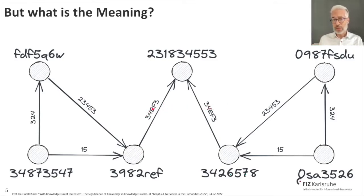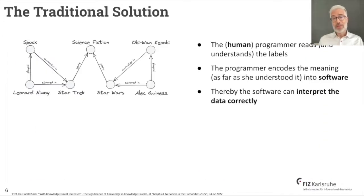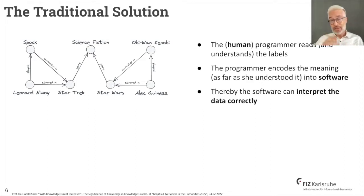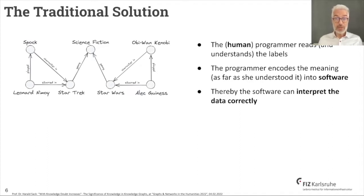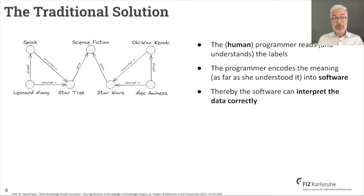The computer sees that nodes with different labels are connected to a single node by an edge with the same label, but has no idea what that really means. So interpretation still involves a human. If you want to build an application using that kind of data, the human programmer reads and understands the labels and encodes the meaning into software. The software can then interpret the data according to how well the programmer understood it — no problem so far.